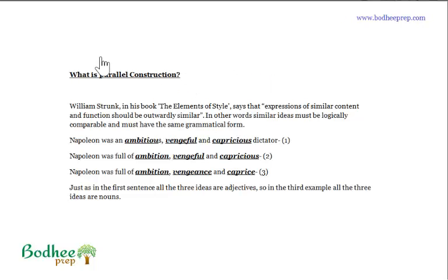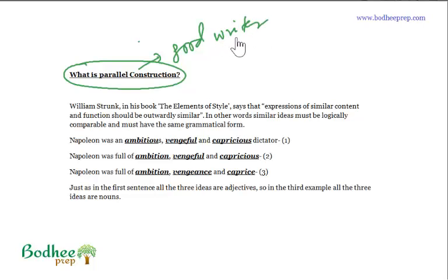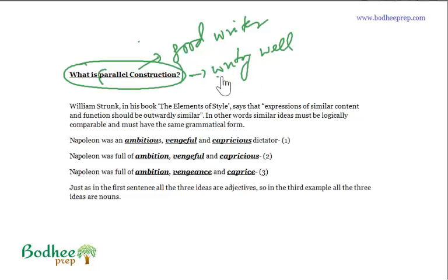We come to the most interesting part of English grammar — parallel construction. Parallel construction can help you become a good writer. Unlike subject-verb agreement, pronouns, tenses, punctuation, and many other rules, parallel construction is all about writing well. So if you want to become a good writer, you must understand the importance and the nuances of parallel construction.